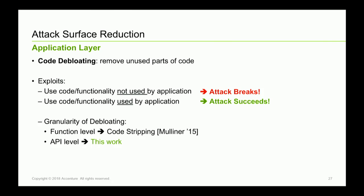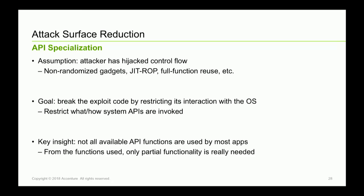So what we do is enforce something at the API level — we call this API specialization. The threat model assumes the attacker has full function reuse capability, and our main goal is to really restrict how the API will interact with the operating system. Think about VirtualLock, VirtualProtect, or mprotect on Linux — we want to enforce how these APIs are used. The attacker uses the same functions as the legitimate application but with different arguments: you may allocate a memory page marked as readable, but the attacker marks it writable and executable. So cut-stripping doesn't work — you need to enforce how these functions are called and what arguments are passed.